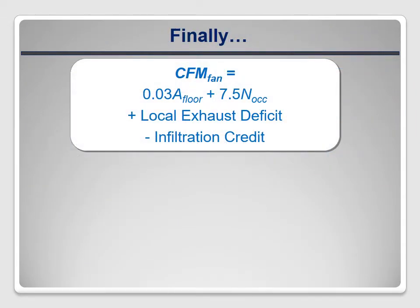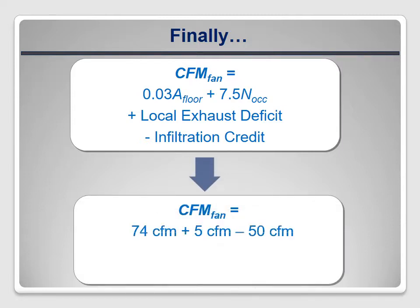We now have all the pieces needed to calculate the required fan size for this existing home. The base formula gave us 74 CFM total desired ventilation rate; the local exhaust deficit was 5 CFM; and the infiltration credit was 50 CFM. Combining them: 74 + 5 − 50 = 29 CFM. We need to install a fan that can provide at least 29 CFM of continuous ventilation.